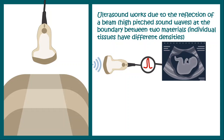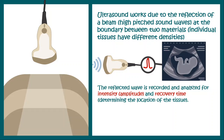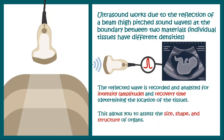This image is known as the ultrasonograph. The reflected wave is recorded and analyzed for its intensity, which gives the amplitude, and recovery time, which tells about the depth of different tissues and tissue layers and gives an idea about the location of the tissue. This allows us to assess the size, shape, and structure of the organs and tissues.